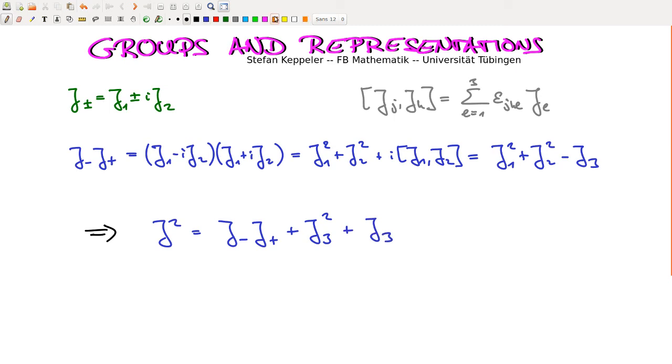What happens if we multiply them in the opposite order? So we start with j+ times j-. Then these signs here change, and then the sign in front of the commutator changes. And here it's a plus j3. So j squared can also be expressed as the product j+ times j- plus j3 squared, but this time minus j3.